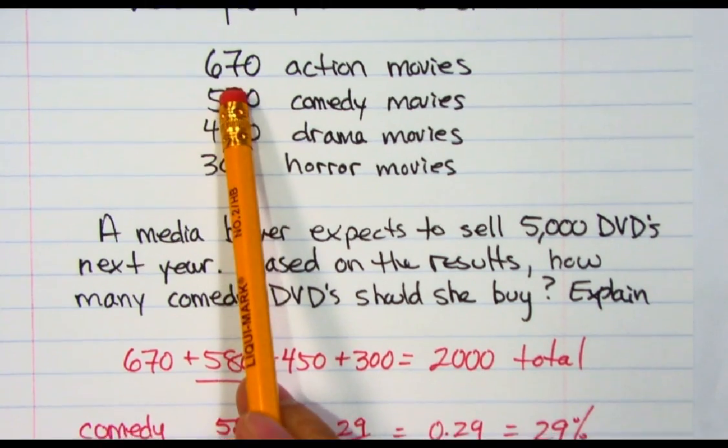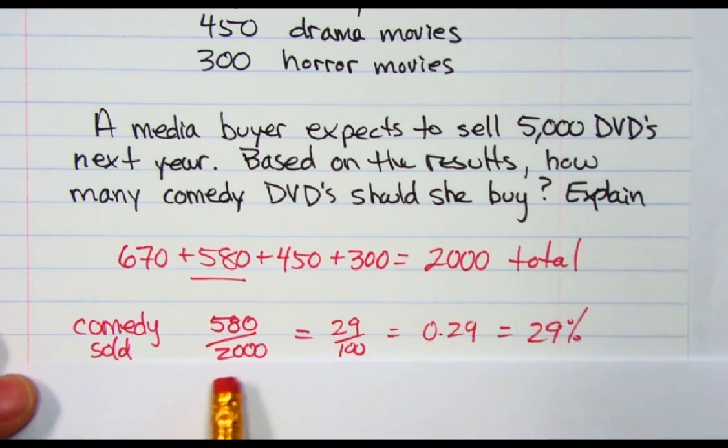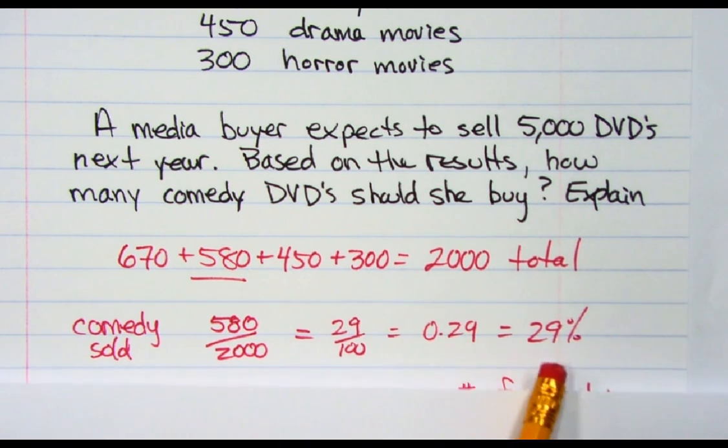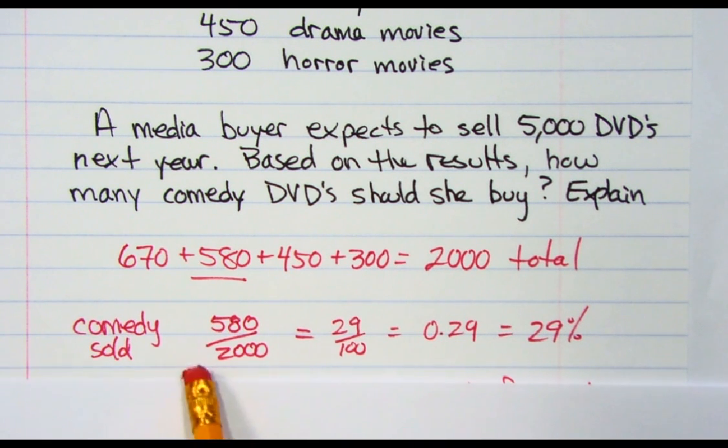Of those 2,000, 580 of them were comedies. I can say last year I did 580 out of 2,000, which reduces to 29 over 100, which is 29%. So 29% of all the movies that were sold were comedy movies.